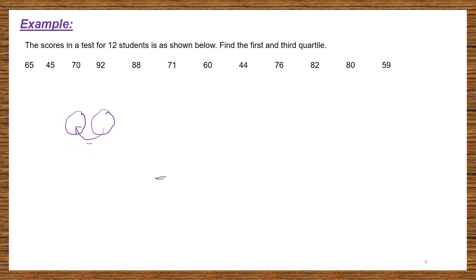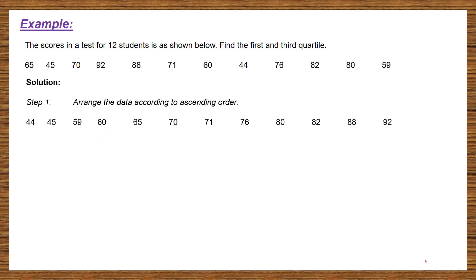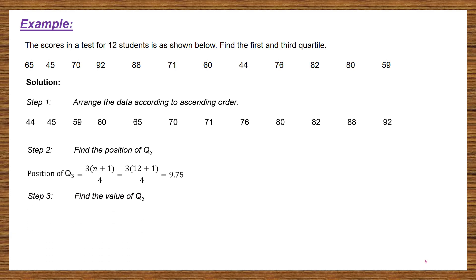Next, proceed to how to calculate Q3. Arrange the data, find the position of Q3: 9.75. Find the value of Q3, which is in between 80 and 82. Using the formula: lower value plus decimal times upper value minus lower value, the final answer is 81.5.